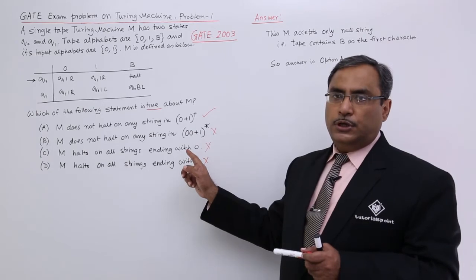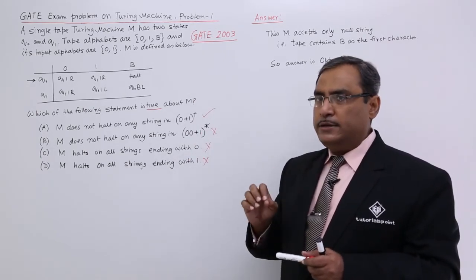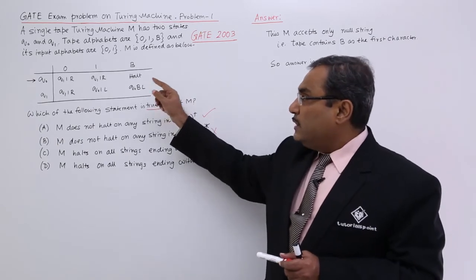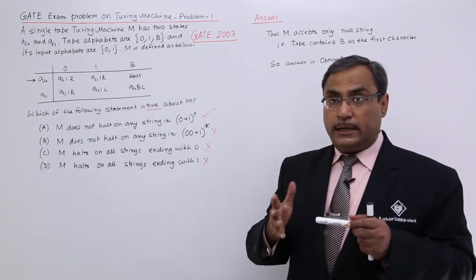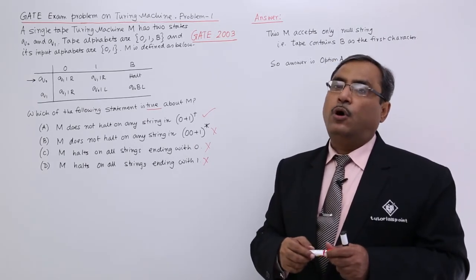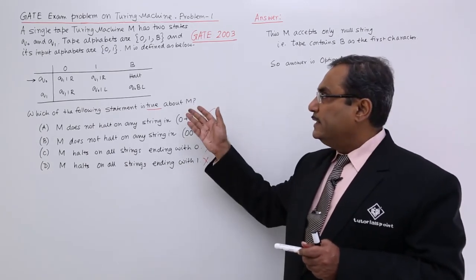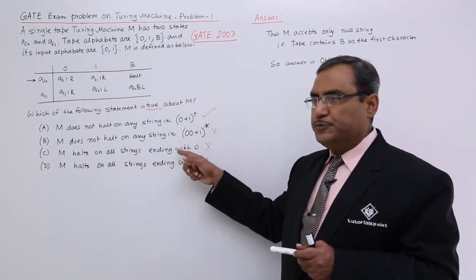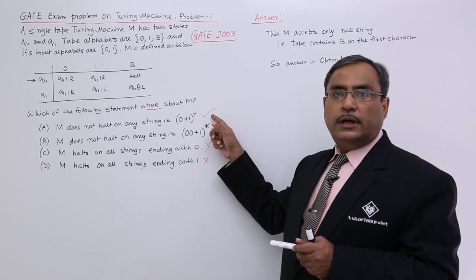Whenever such question will come you should be looking at the problem with a very analytical mind and check that when the machine will hold and what is the desired input or what is the characteristic of the input string for which the machine will hold and it will satisfy your answers. I think you are getting this logic. I have explained each and every option whether they are false or they are true.